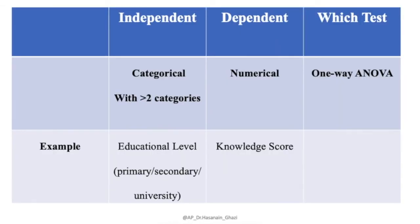If the independent variable is categorical with more than two subcategories — for example, educational level: primary, secondary, and university, or race — and the outcome is numerical, like a knowledge score or exam score, the statistical test to use is one-way ANOVA.